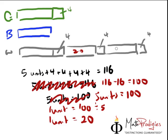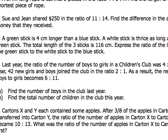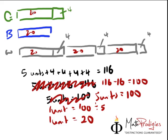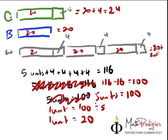Therefore, if each unit equals twenty, we can find each stick length. The question asks us to express the ratio. Green stick equals twenty plus four, which gives you twenty-four. Blue equals twenty. White equals twenty plus twenty plus twenty, which is sixty, plus four plus four plus four, which is seventy-two. So sixty plus twelve gives you seventy-two.